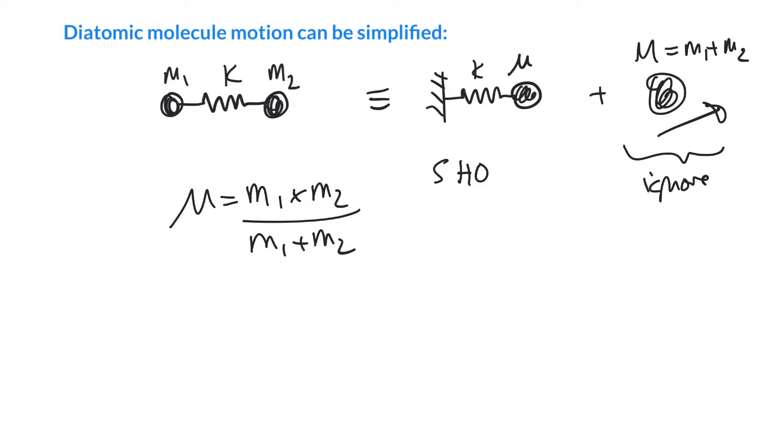We can write down the Schrödinger equation. The one-dimensional time-independent Schrödinger equation looks something like this. It is minus h-bar squared over 2m, times by the second derivative with respect to position of the wave function, plus v the potential energy, times by the wave function, is equal to e times the wave function.